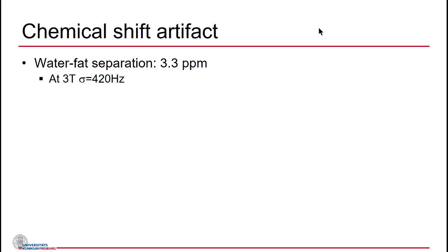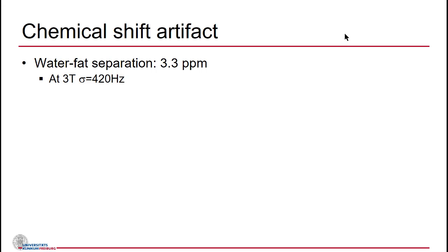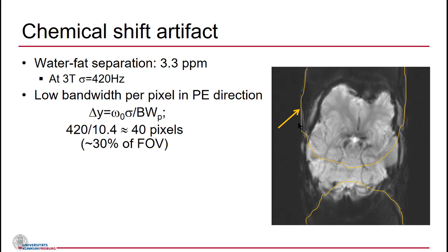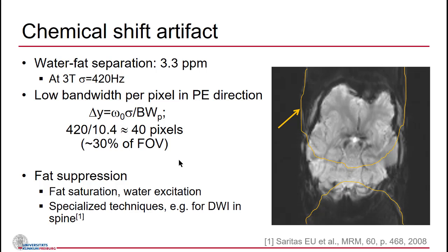Chemical shift is also related to the time spent in k-space, but this time we're talking about phase. The water-fat separation is about 420 Hz at 3 Tesla, and it turns out our readout time is so long that the fat-water shift is about 40 pixels — about 30% of the field of view. The trick here is just to use fat suppression or spectrospatial excitation, or in some sequences like DWI of the spine, other tricks can be used.